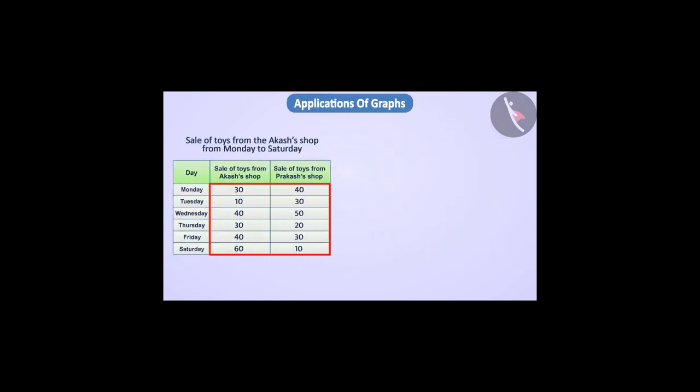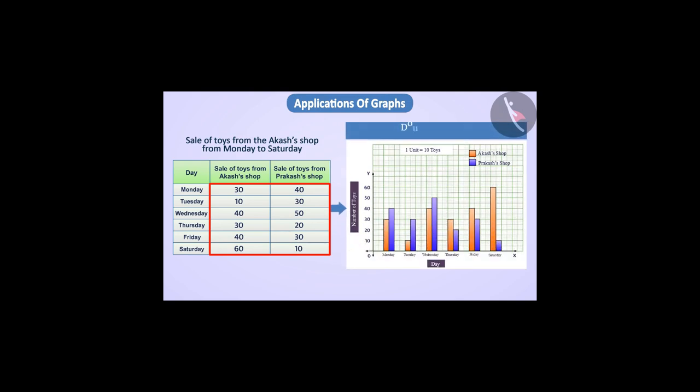When it comes to comparing two sets of data, we use the double bar graph. For example, the sale of toys from Akar's shop and the sale of toys from Prakash's shop can be compared by looking at the double bar graph shown. You can see that two sets of data are reported simultaneously in the double bar graph.